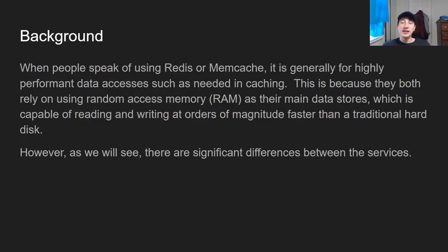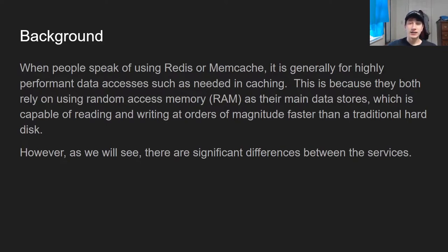Basically, in terms of what Memcache and Redis are, they are both solutions that are typically used for caching in large-scale distributed systems. The reason for this is that they generally store their data in RAM — random access memory — and that allows you to build something called a distributed hash map, which can access keys and set keys at O(1) time, which is great, because obviously databases on disk can't do that.